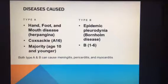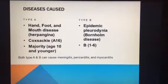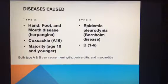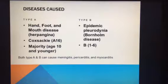The next type is Type B, known as epidemic pleurodenia, and this is classified under Coxsackie strands B1 through B6. Both Type A and Type B can lead to meningitis, pericarditis, and myocarditis.